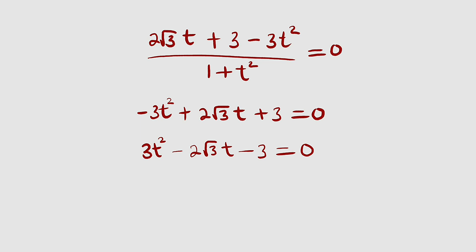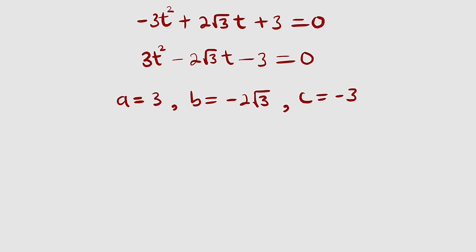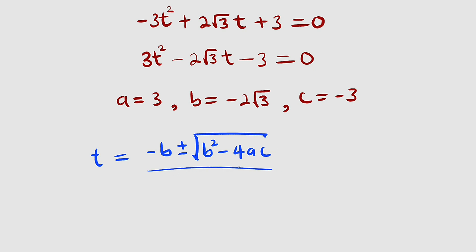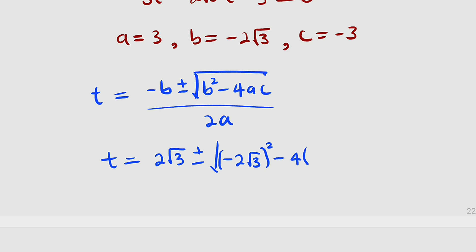This is a quadratic equation which we solve in terms of t. The leading coefficient a is equal to 3, b is equal to negative 2 root 3, and c is equal to negative 3. Our formula is t equals negative b plus or minus the square root of b squared minus 4ac, divided by 2a. Let us substitute these values.